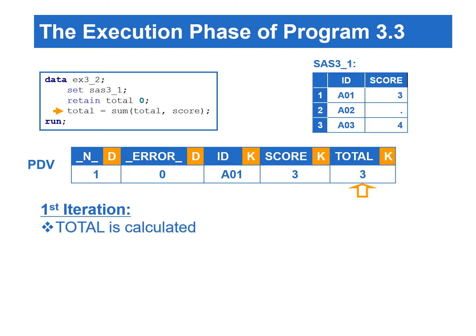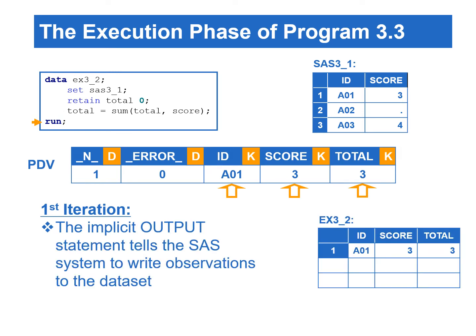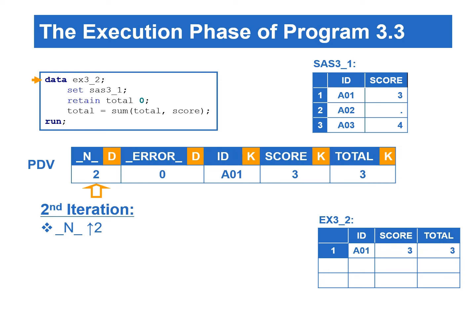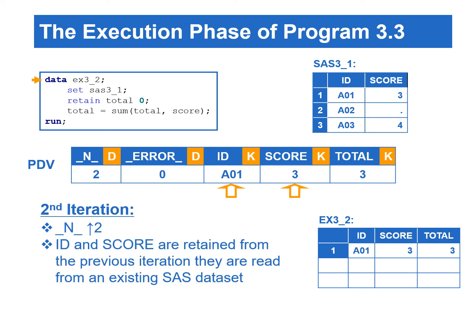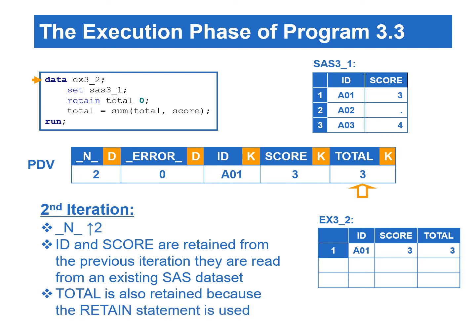Total is calculated. The control reaches the end of the first iteration of data step execution. Since there is no explicit output statement, the implicit output at the end of the data step tells SAS to write observations to the output data. SAS returns to the beginning of the data step to begin the second iteration. At the beginning of the second iteration, _N_ is incremented to two. The variables read from the input data set, including ID and score, retain their values in the PDV. The newly created variable total is also retained because the retain statement is used. Without using the retain statement, total will be set to missing at this point.